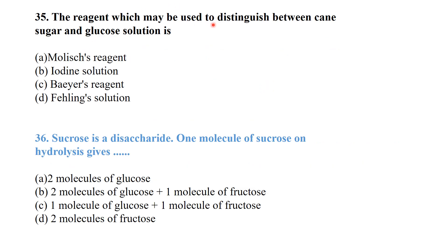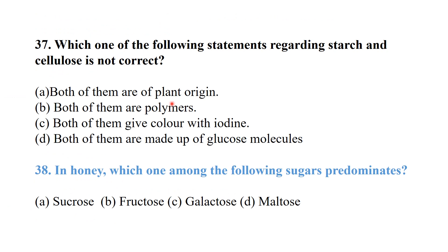The reagent which may be used to distinguish between cane sugar and glucose solution is Fehling's solution. Sucrose is a disaccharide — one molecule of hydrolysis of sucrose gives one molecule of glucose and one molecule of fructose.